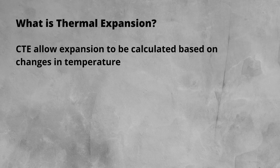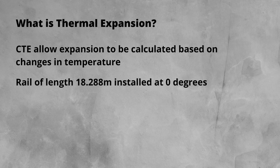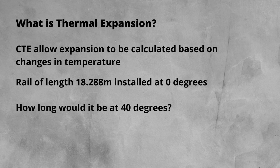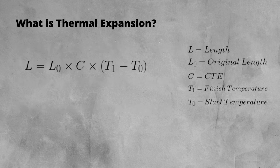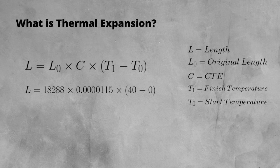The coefficient allows expansion to be calculated based on changes in temperatures. It can be surprising how much expansion can occur. Let's run an example. A rail is installed at 0 degrees, with a length of 18.288 metres. If the rail is installed in the winter, hence the 0 degrees, how long would it be during the hot weather of the summer, when the rail temperature is at 40 degrees? Change in length equals the coefficient times the original length, converted into millimetres, times the change in temperature. Plugging the numbers in gives us a change in length of 8.4 millimetres. This shows how much a rail can change in length with the change in temperature. If that is a rail of just over 18 metres, imagine how this compounds over longer distances.